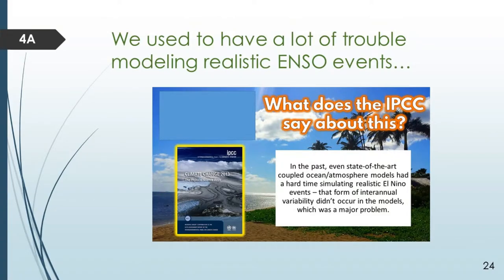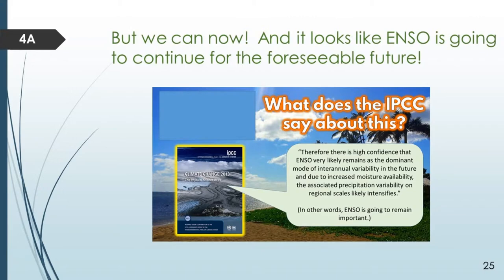Until fairly recently, climate modeling of El Niño was complicated. Even state-of-the-art models were having a very hard time simulating how El Niño works — it is a very complex coupled ocean-atmosphere phenomenon requiring the atmospheric model, the ocean model, and their coupling all working accurately. But we do seem to be able to do that now. It looks like El Niño is not going to change substantially in the foreseeable future. All climate models continue to show a phenomenon with a period of about four years on average, with similar magnitude — global warming does not appear to produce more frequent or stronger El Niño events for the rest of the 21st century.